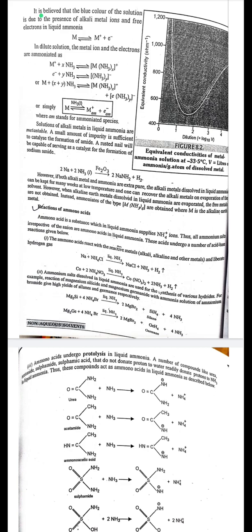Solutions of alkali metals in liquid ammonia are metastable. A small amount of impurity is sufficient to catalyze the formation of amide: 2Na + 2NH₃ → 2NaNH₂ + H₂ (catalyzed by Fe₂O₃). However, if both alkali metals and ammonia are extra pure, the dissolved metals can be kept for many weeks at low temperature, and the metals can be recovered on evaporation. When alkaline earth metals dissolved in liquid ammonia are evaporated, the free metals are not obtained; instead, ammoniates of the type M(NH₃)₆ are obtained.